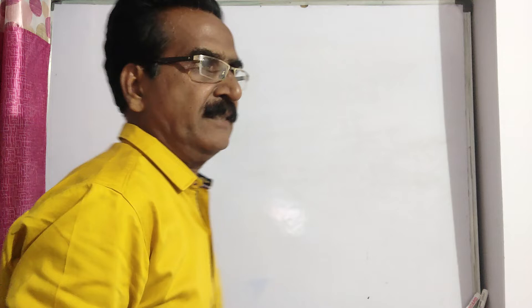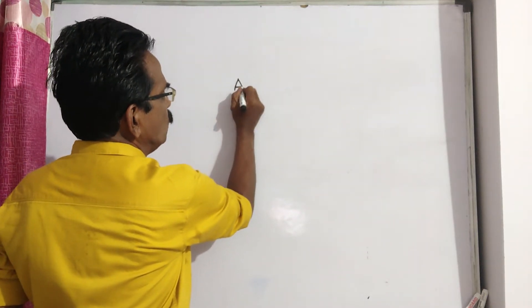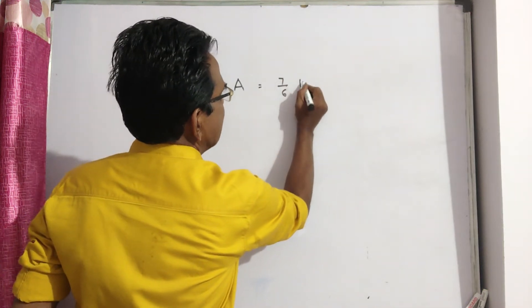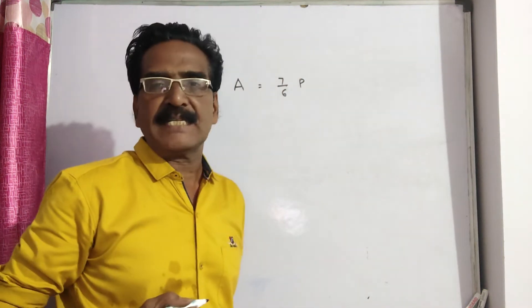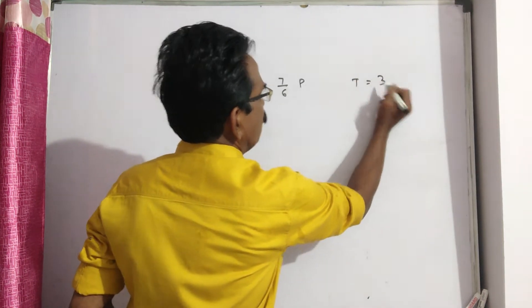A certain sum of money amounts to 7 by 6 of itself in 3 years. So, a certain sum of money amounts to A equal to 7 by 6 of itself, means 7 by 6 of P in 3 years. T is equal to 3.